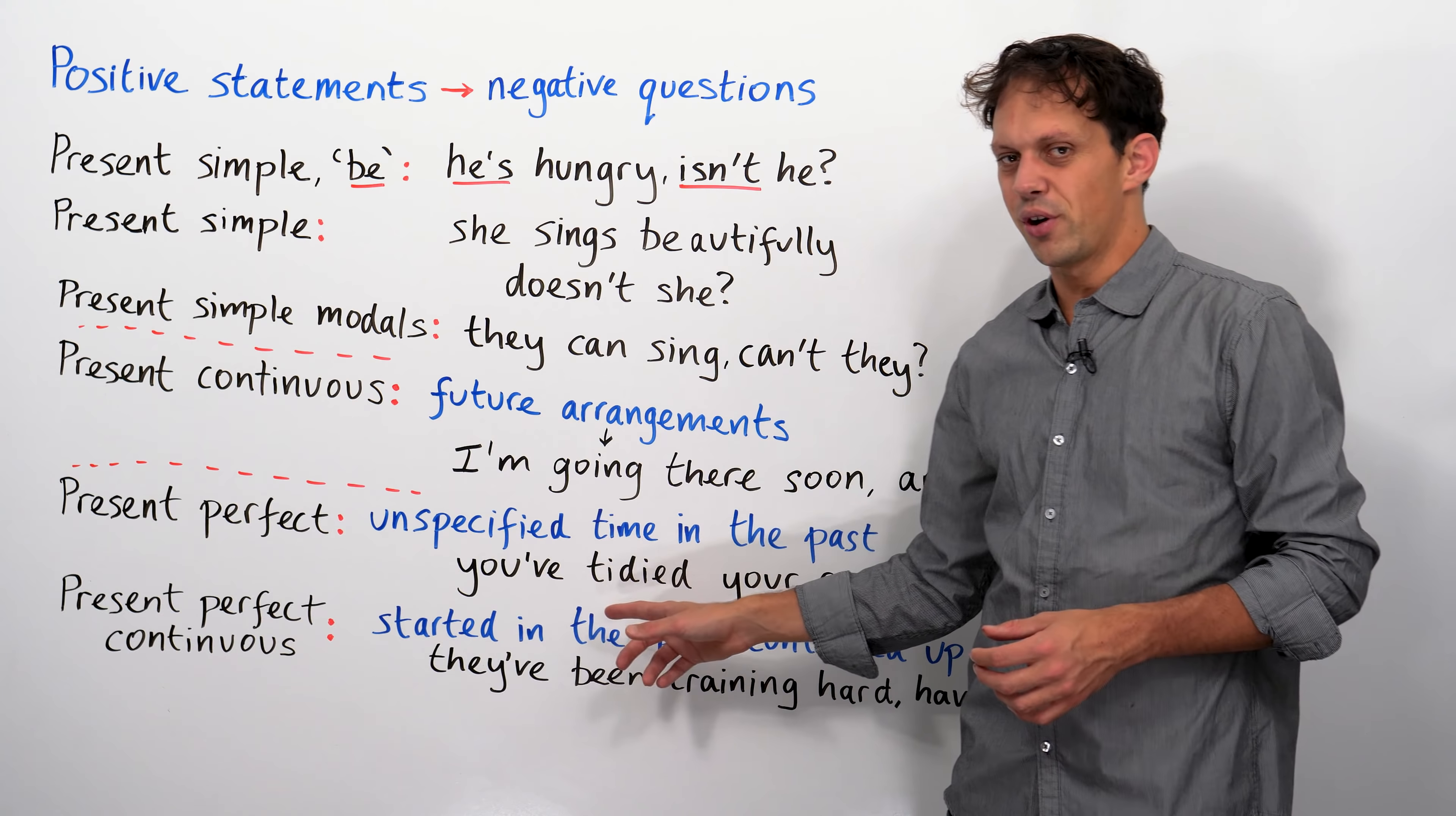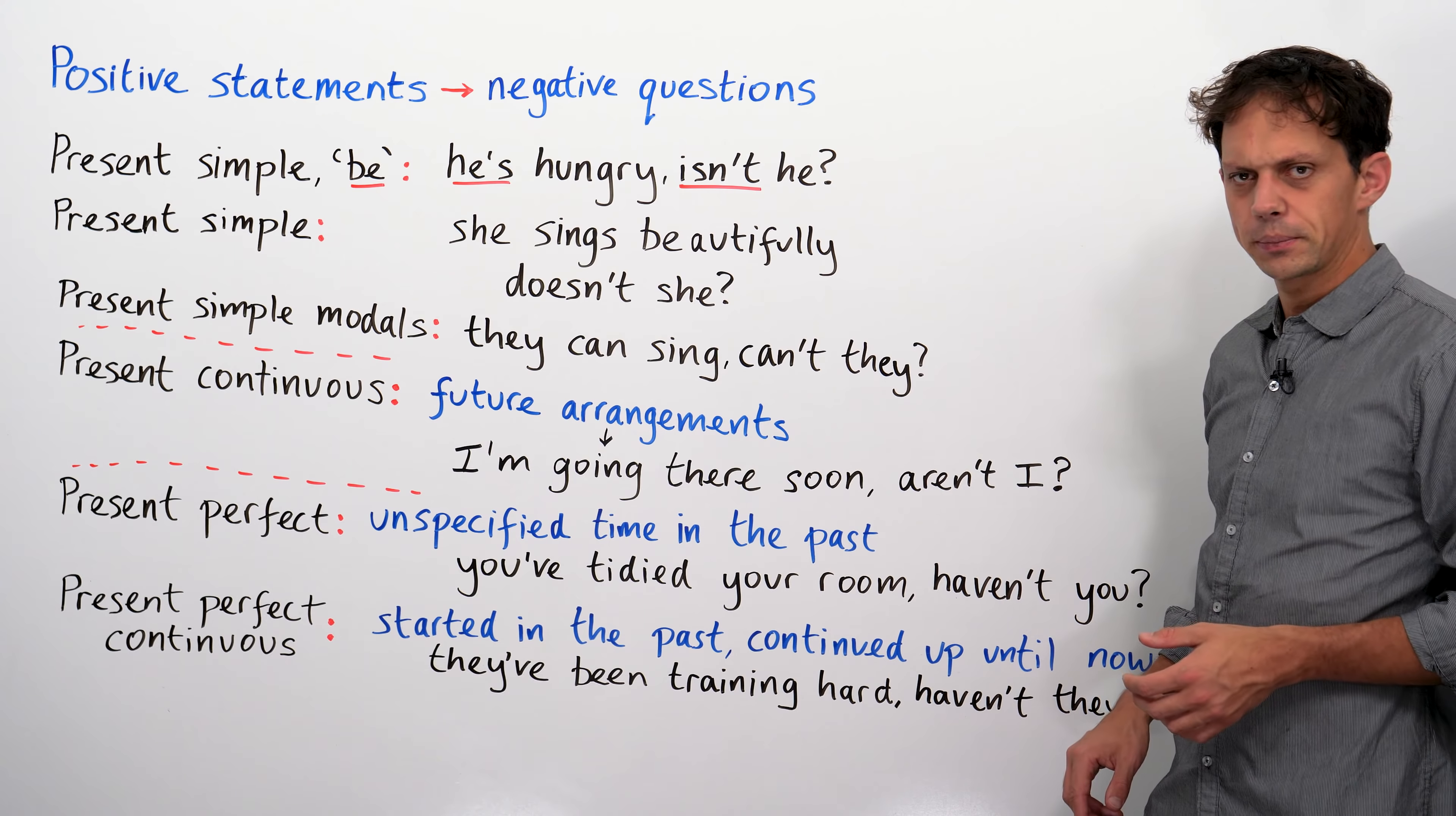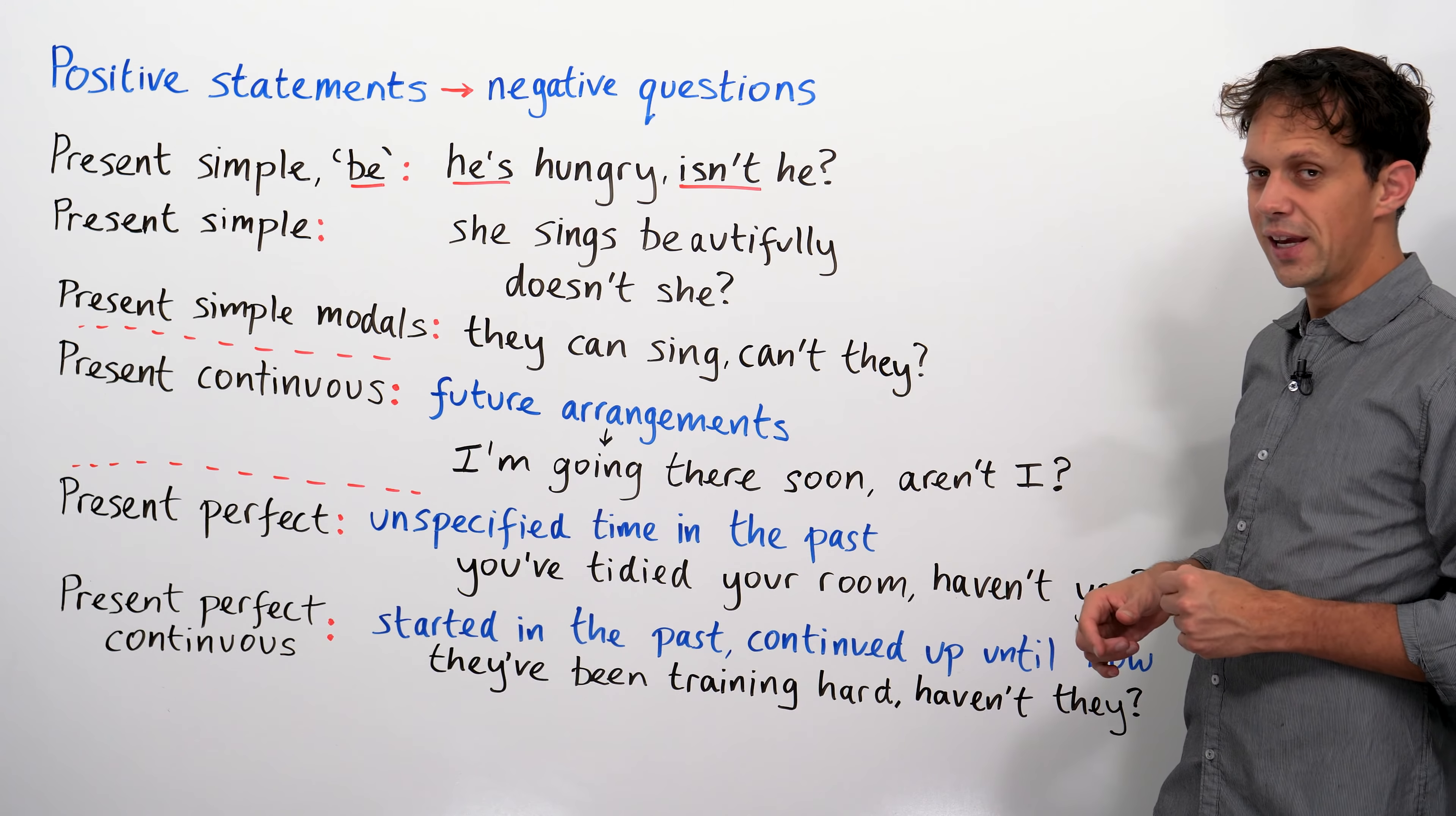I haven't tidied my room, have I? No, I've been bad. I haven't tidied my room, have I? They haven't been training very hard, have they? Right. We're now going to have a look at standard past tense verbs, so I'll see you on the next page, so to speak.